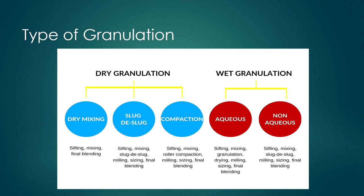In the wet granulation process, there are two types: aqueous and non-aqueous. In both aqueous and non-aqueous cases, the mechanism involves shifting, mixing, blending, drying, and milling operations. At the undergraduate level, only the granulation process will be discussed.